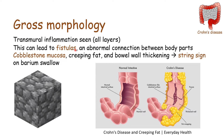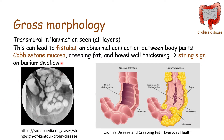Another finding is creeping fat and bowel wall thickening. In comparison to a normal bowel, the affected area in Crohn's disease will have very thick walls, and creeping fat — essentially more fat surrounding the bowel. The bowel wall thickening leads to the string sign on barium swallow. A patient swallows a barium solution which provides contrast on imaging, and we can see these strings because the thickened bowel wall leaves very little space for bowel contents, making it look like strings.